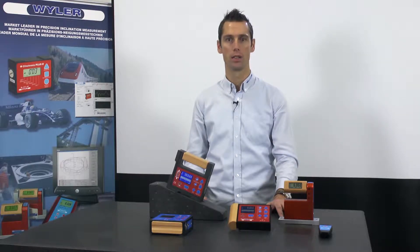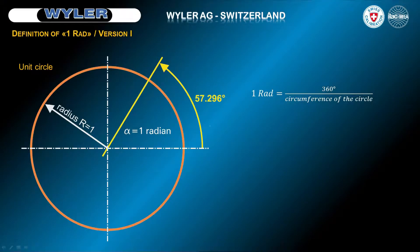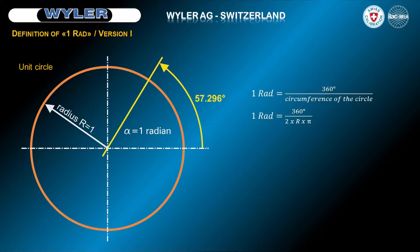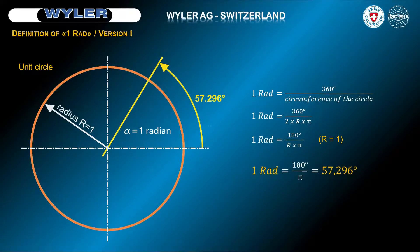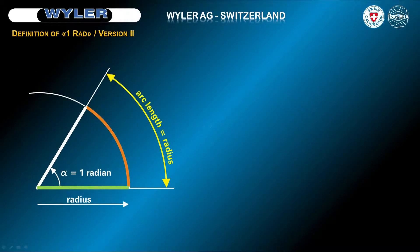The conversion is easily possible in any desired unit. The definition of a radian equals a full circle in degrees divided by the circumference of the unit circle, equal to 360 degrees divided by 2π, equal to 180 degrees divided by π, equal to 57.296 degrees.